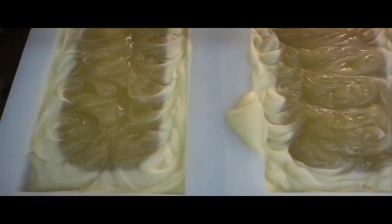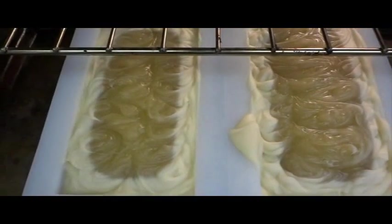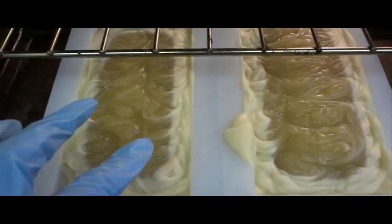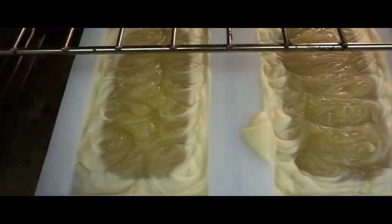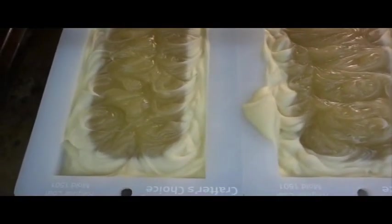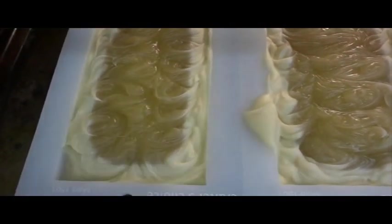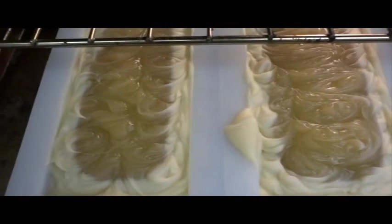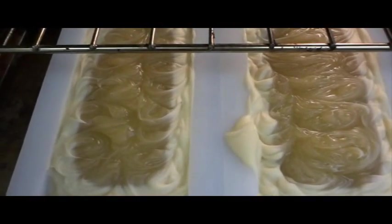So what we want to do for cold process oven process soap is we want this. Generally it starts in the center and moves its way outward. We want the whole thing to look like jelly. At which point we're going to remove it from the oven because it doesn't need any more heat. So let me just let it finish up this ten minutes and then I'll check on it.